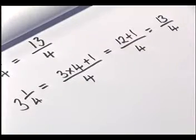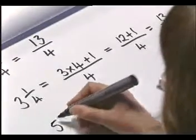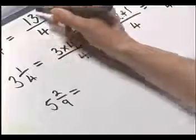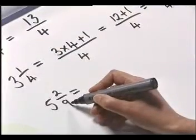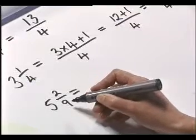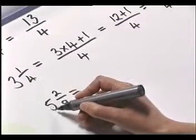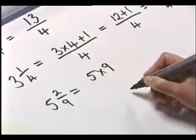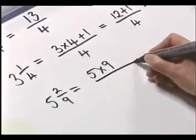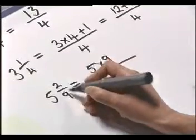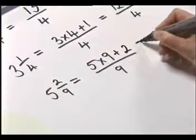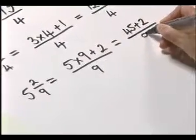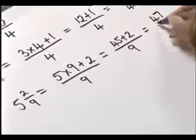Let's have a look at one more example. Let's say we've got five and two ninths. We want to turn it into ninths. If we want to take a whole one we need nine ninths, and we've got five whole ones, so we're going to have five times nine lots of ninths. Then we need to add on the two ninths we have here. So five times nine is forty-five, plus the two, and they're all ninths — so we have forty-seven ninths.